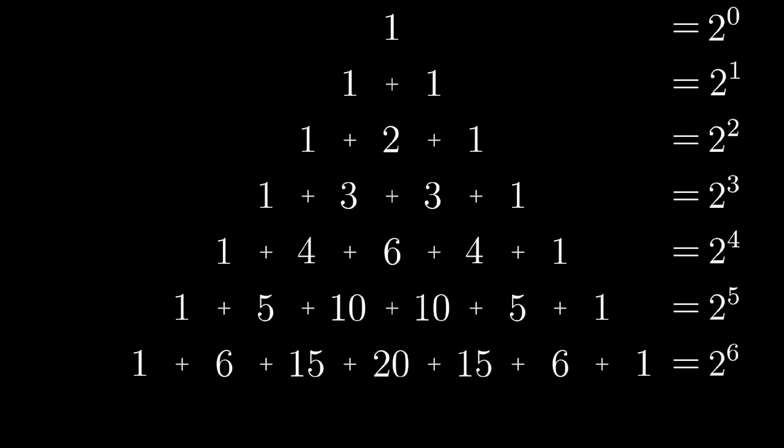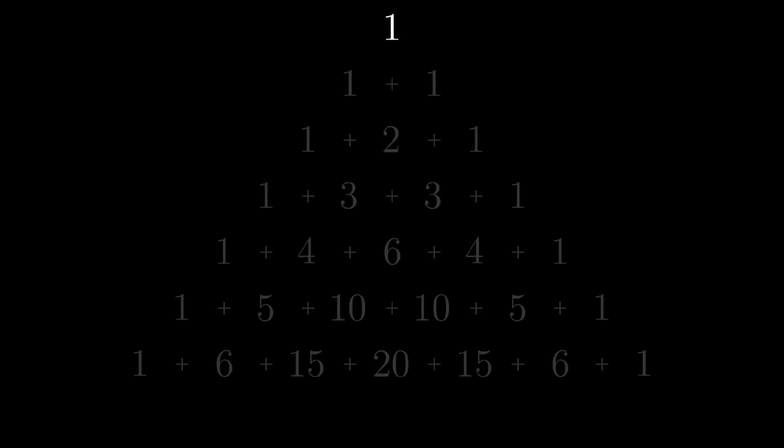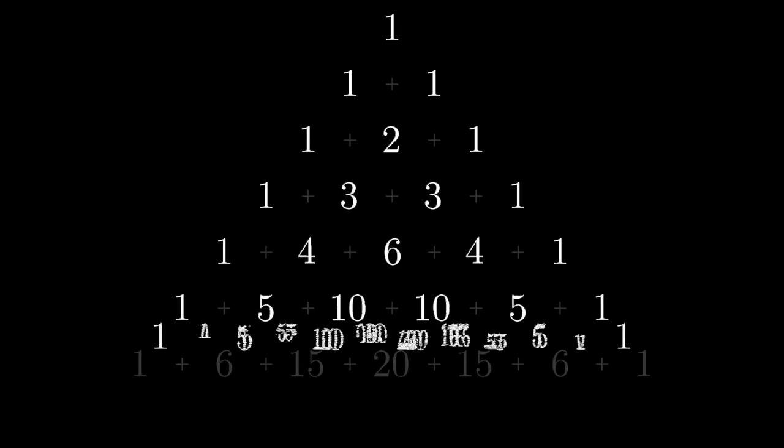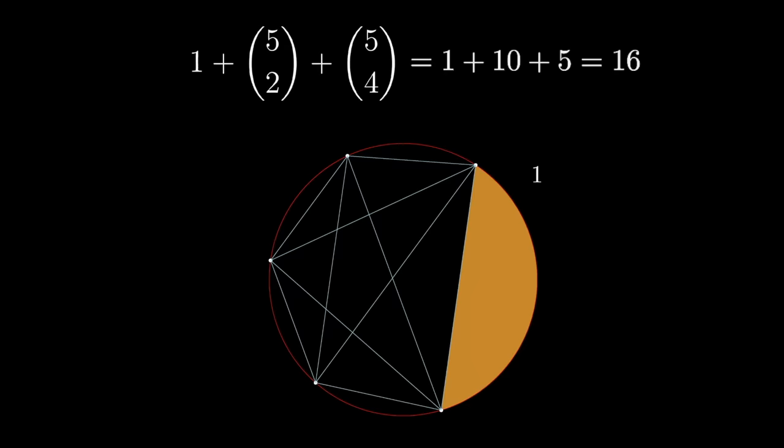But one that I like is to think about how as you go from that first row to the next one, it's like the number 1 is sort of donating two copies of itself into the next row. Likewise, as you go from the second row to the third, each of those 1s is donating two copies of itself to the next row. And in general, as you go from one row to the next, each number donates two copies of itself to the one below. So, as you add up the totals for each of these rows, it stands to reason that those totals double on each iteration.